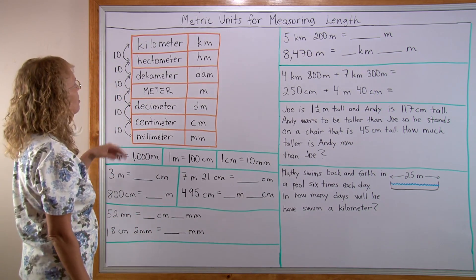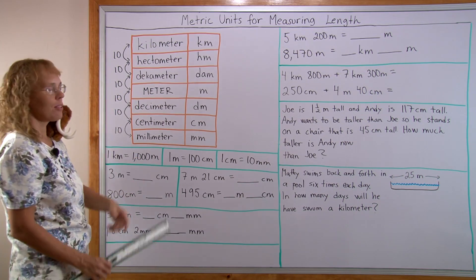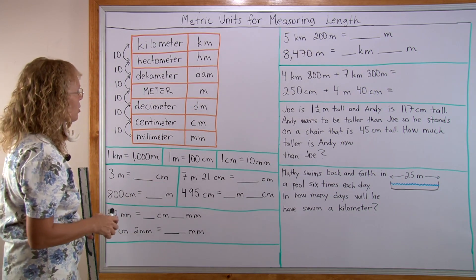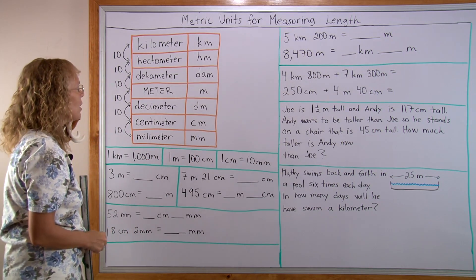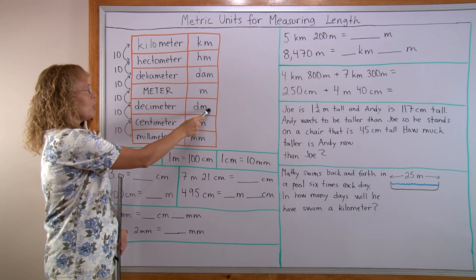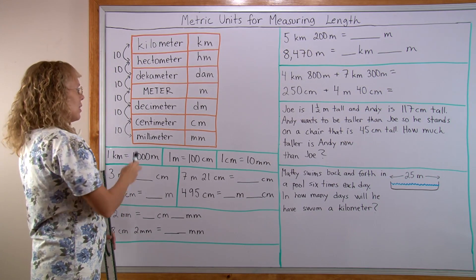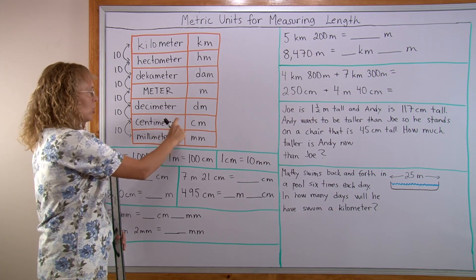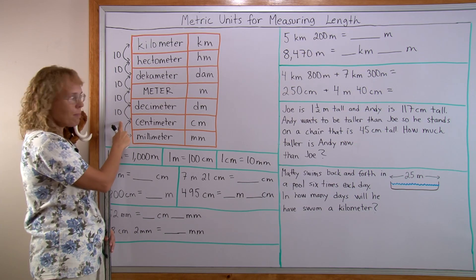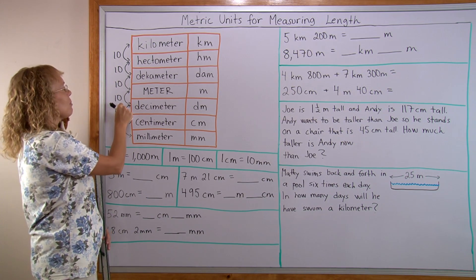I wrote a big table of all the metric units we are going to look at in this lesson, the basic unit being the meter. Students are probably very familiar by this point with centimeters and millimeters. But there's a unit in between: between centimeter and meter there's a decimeter. Each time, the conversion factor between two neighboring units is 10. Ten millimeters makes 1 centimeter, 10 centimeters makes a decimeter, and then 10 decimeters makes 1 meter.